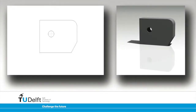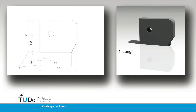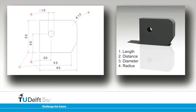You will encounter the following dimension types: a length, for example the length of a line; a distance between two items such as lines, arcs or other contours; a diameter, denoting the size of a hole or a cylindrical object; a radius, in the case where the dimensional item is not a full circle; and an angle between two lines.